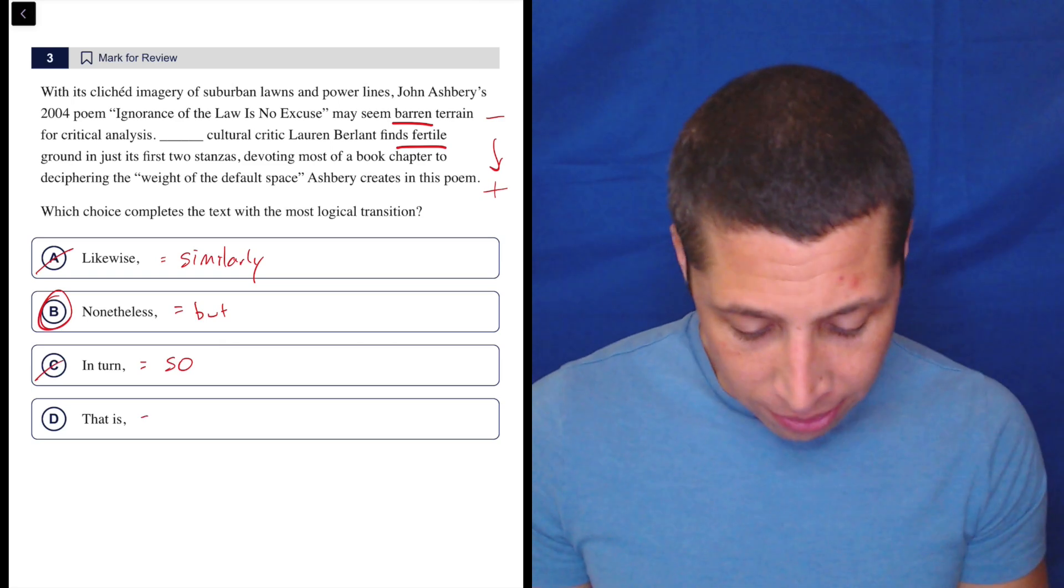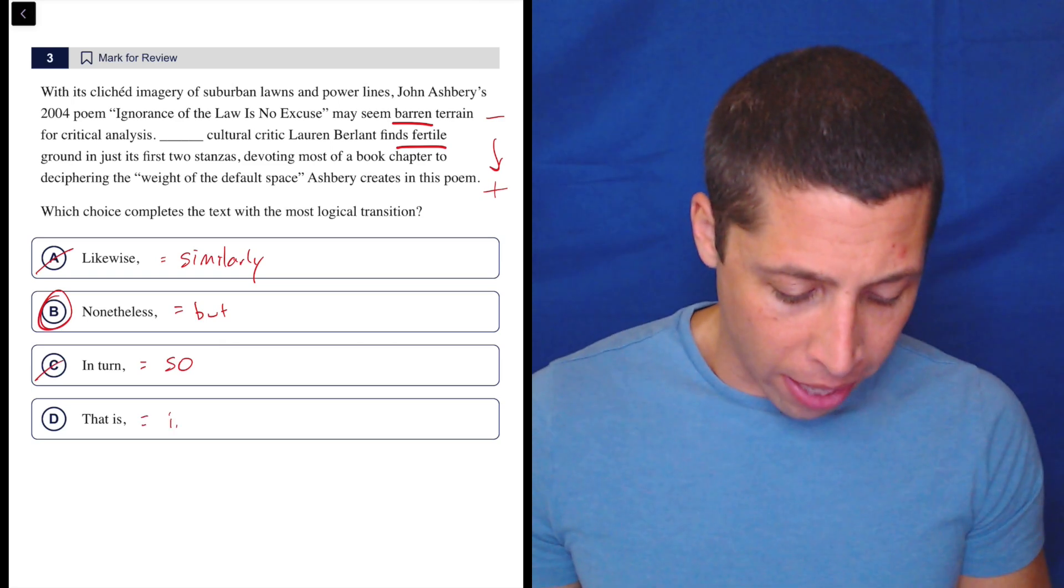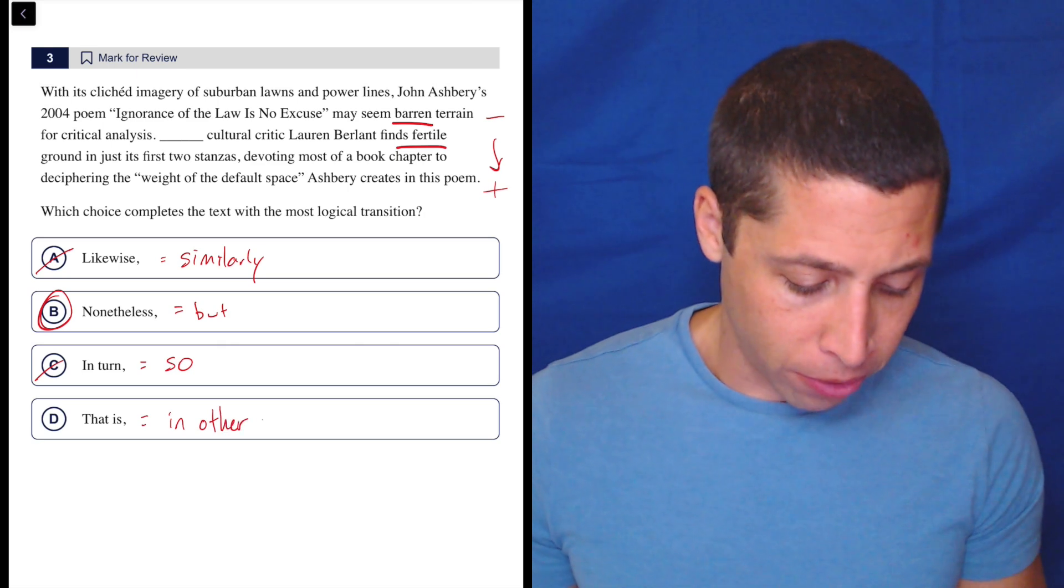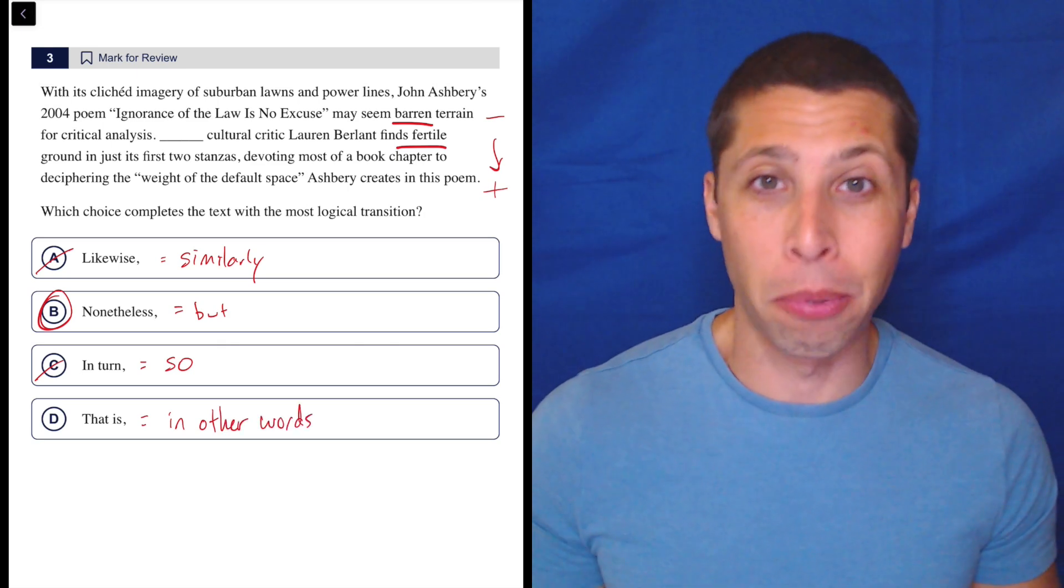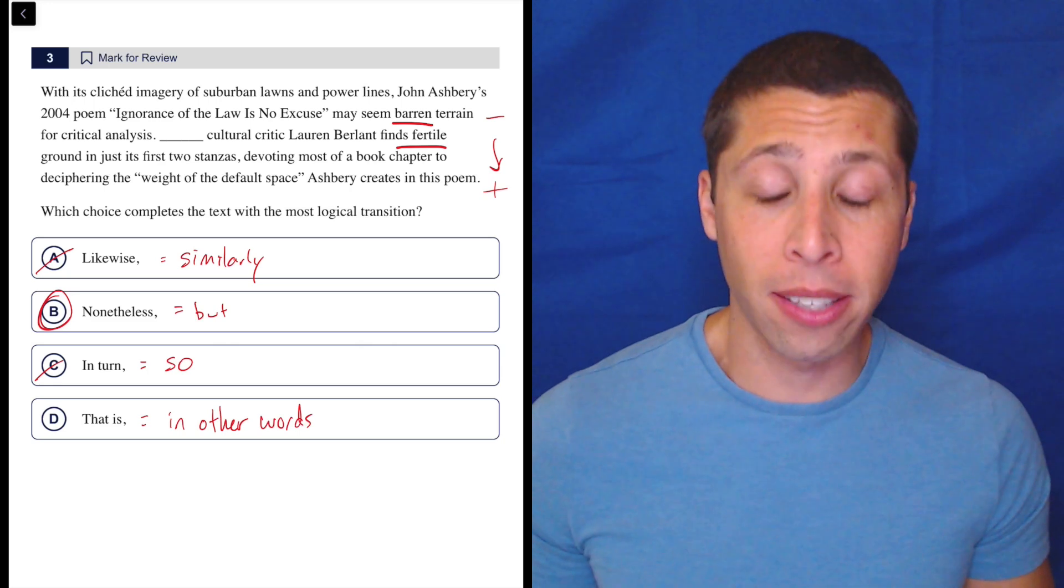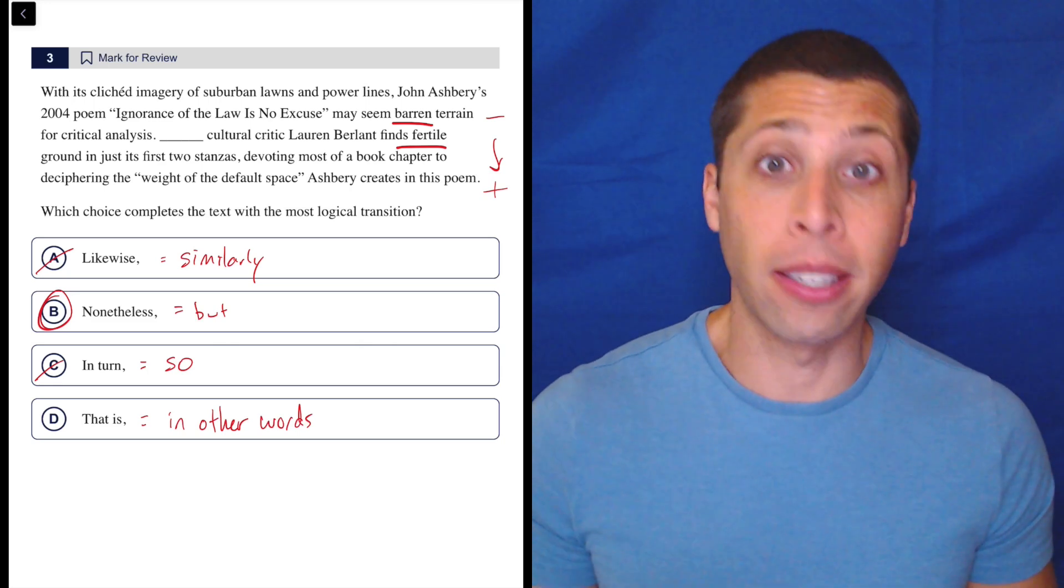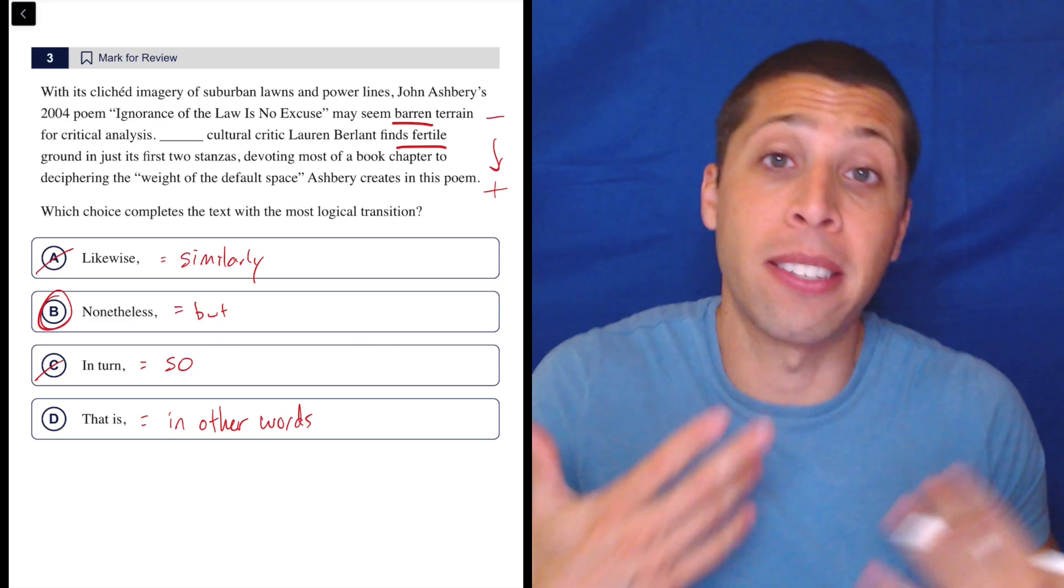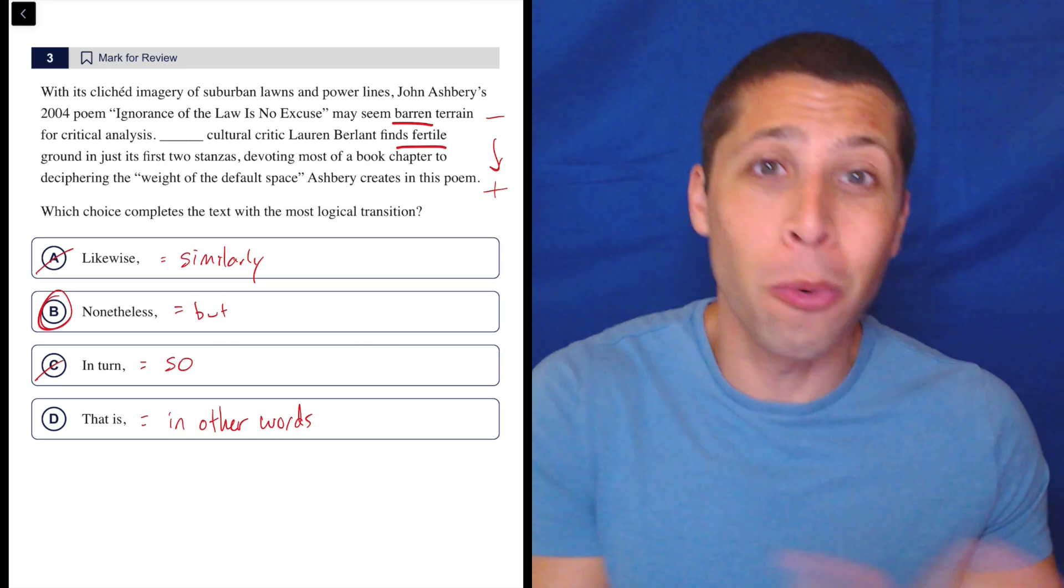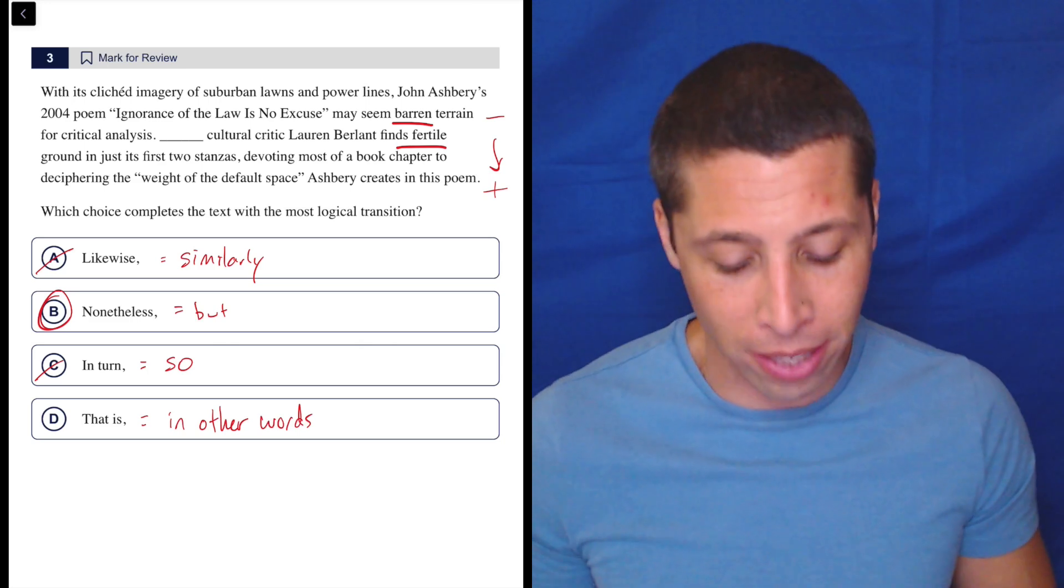That is, that one to me is kind of like in other words. So that's not necessarily one of our main categories, but I do think it's helpful to bring it back to something that's a little bit more common on the SAT. That is would be basically a way to repeat what we just said and to say it in different words. So hopefully that helps, but this is not that, right? This is not in other words, it's new words. It's different. It's a different idea. So that's why it doesn't work.